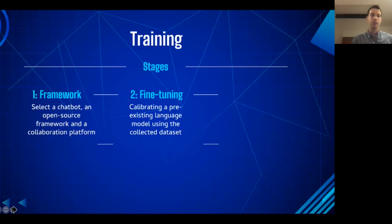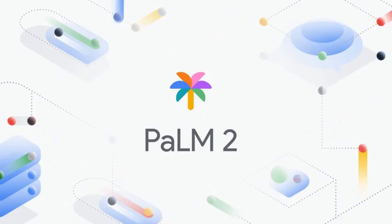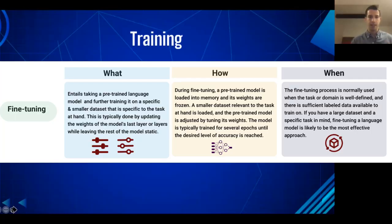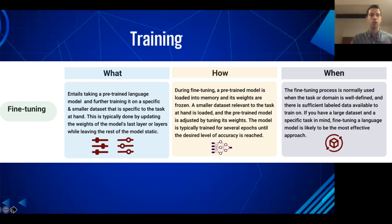You need to fine-tune or calibrate a pre-existing language model — in the case of Google's BART it will be PaLM 2, etc. — using the collected dataset. You're going to use that collected dataset against the language model and see how you can reconcile both, and what things you need to tweak or improve. Again, the language expert will need the help of more technical staff in NLP and machine translation.